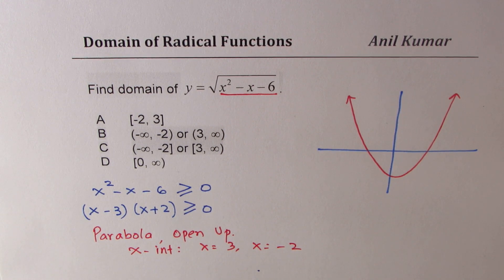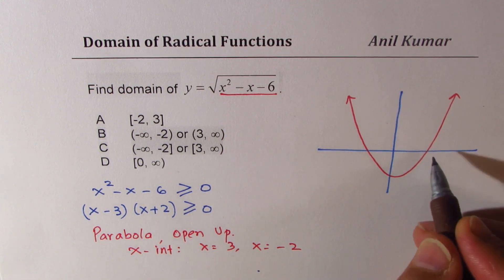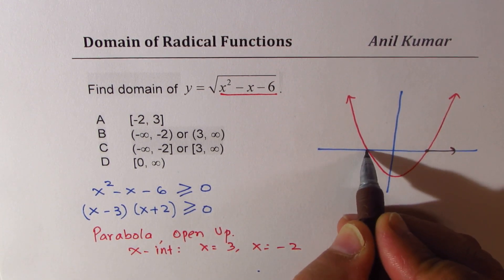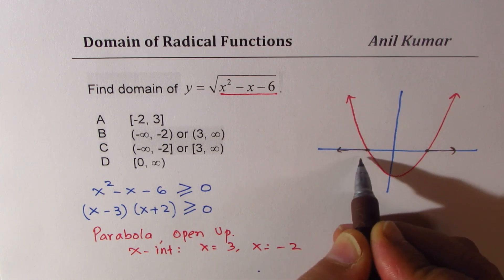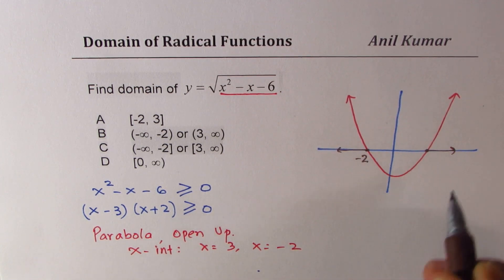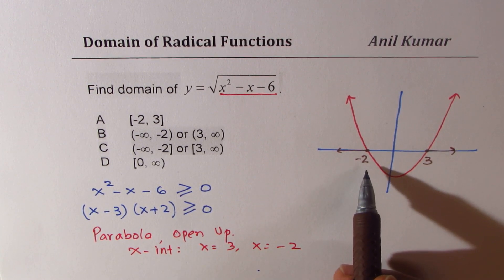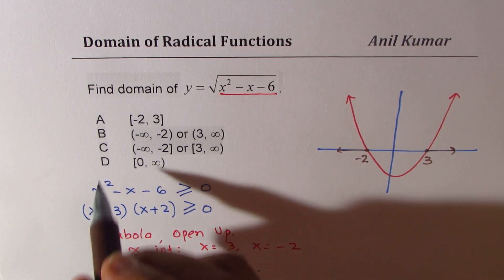That is one part of the solution, and this is the other part of the solution, which is left side of minus 2 and the right side of 3, including minus 2 and including 3. So option C is the right option.